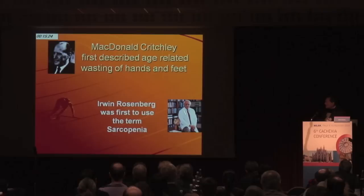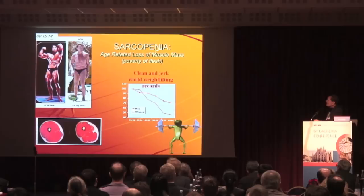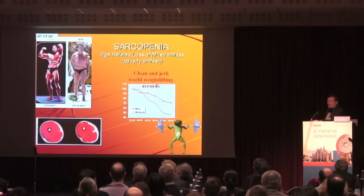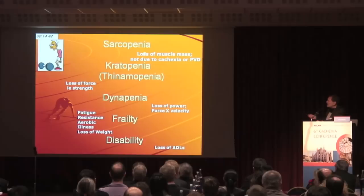Herbert Moser was the first to use the term sarcopenia in a meeting, and Bill Evans then wrote up from the meeting and was the first to publish this. The term was used originally for older people who had muscle wasting. This is showing sarcopenia — age-related loss of muscle mass, which is called 'poverty of flesh' as Herb Rosenberg described it. World records peak around the teenage years and around age 30 we go downhill. That is age-related loss of muscle mass and power; they tend to go together, with power going down more quickly.